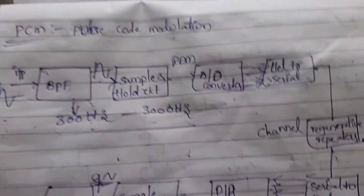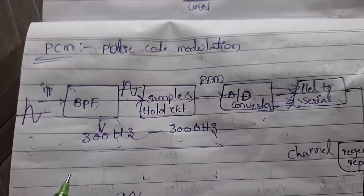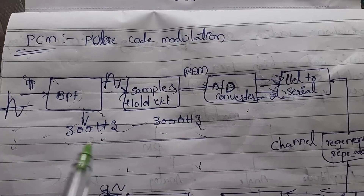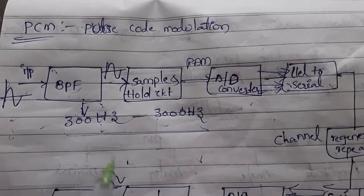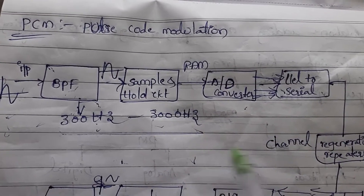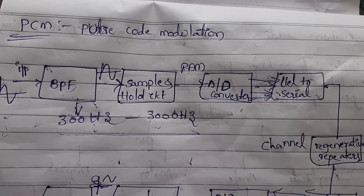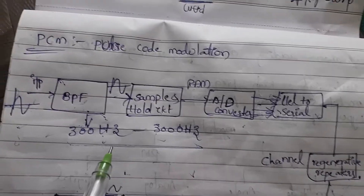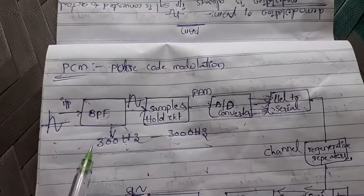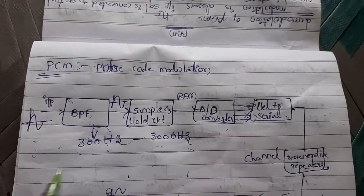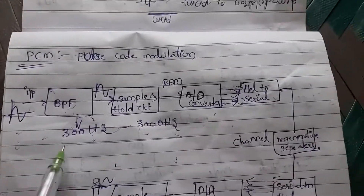PCM stands for Pulse Code Modulation. We are converting analog signals into codes and then codes into pulses. There are four main blocks in this system, and the receiver operation is exactly the reverse of the transmitter.